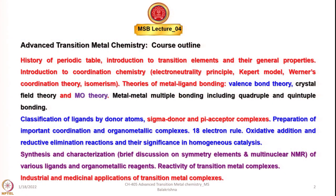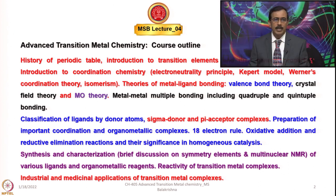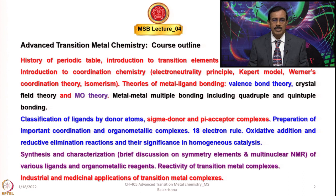I am going to start with an introduction to Transition Elements and their general properties. Once that is done, I would begin with an introduction to coordination chemistry that includes the electron neutrality principle, the Kaepert model, Werner's coordination theory in detail, and then isomerism. After that, I shall begin with theories of metallic bonding, including valence bond theory, crystal field theory, and molecular orbital theory.